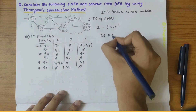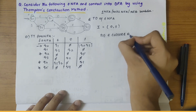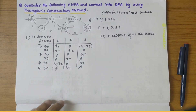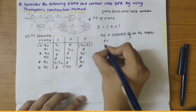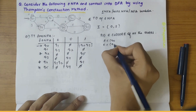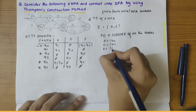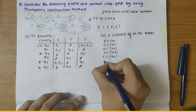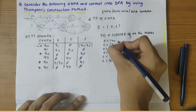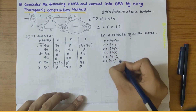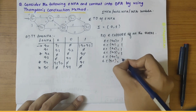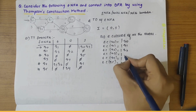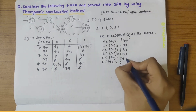Our next step is to find the epsilon closure of all the states. So epsilon closure of Q0, Q1, Q2, Q3, Q4, and Q5 — each comprises the same state itself first: Q0, Q1, Q2, Q3, Q4, and Q5.